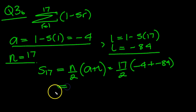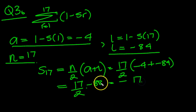Which equals 17 over 2. The minus 4 and minus 84 make minus 88. So let's take the minus to the front, leave the 17 there. 2 goes into 88 44 times. So it's minus 17 times 44.